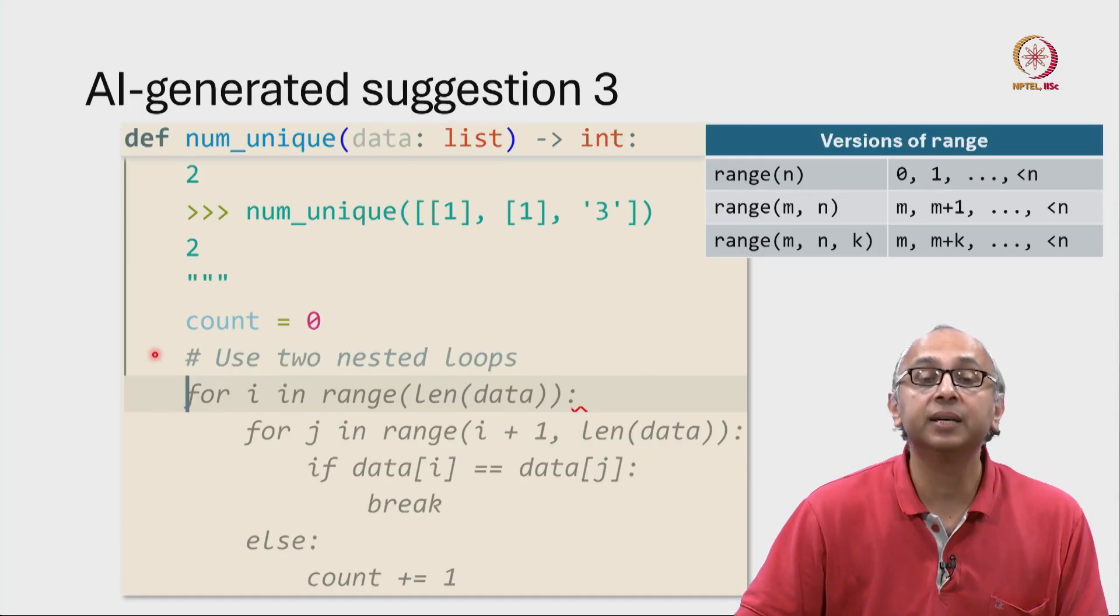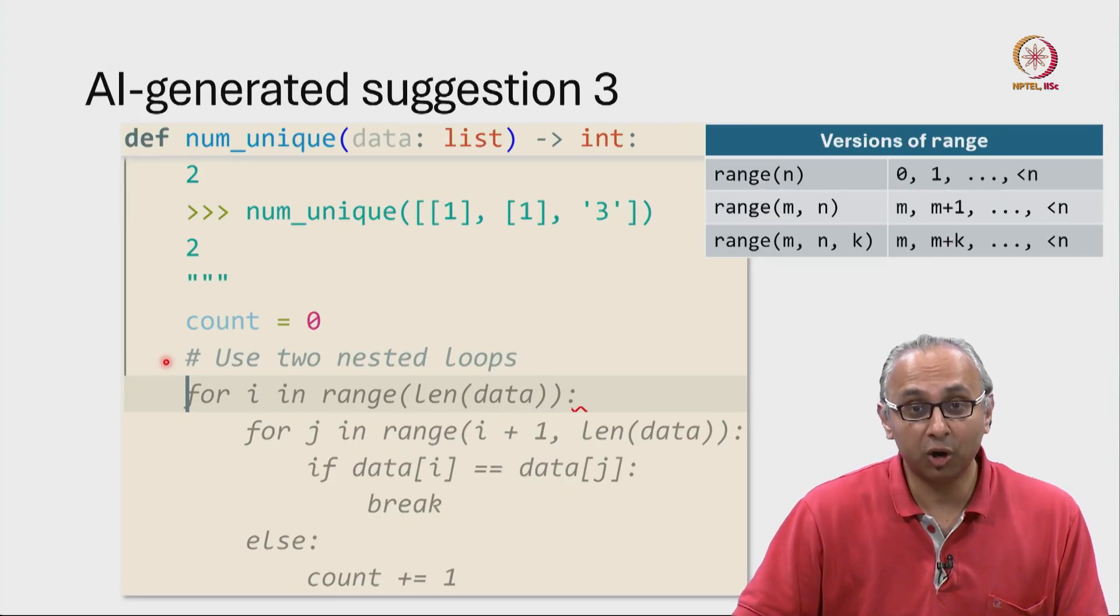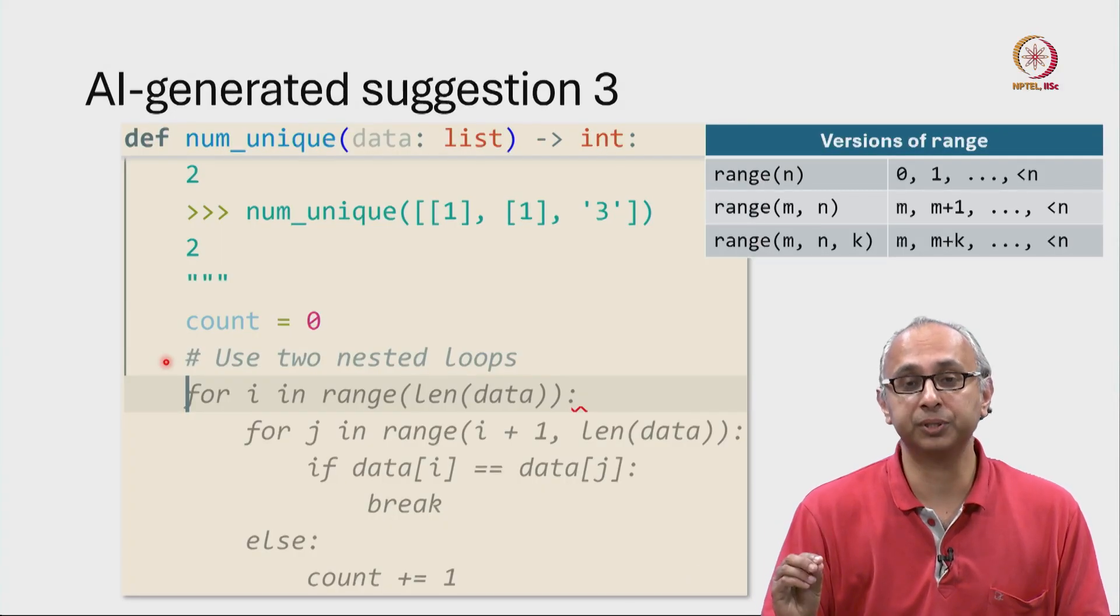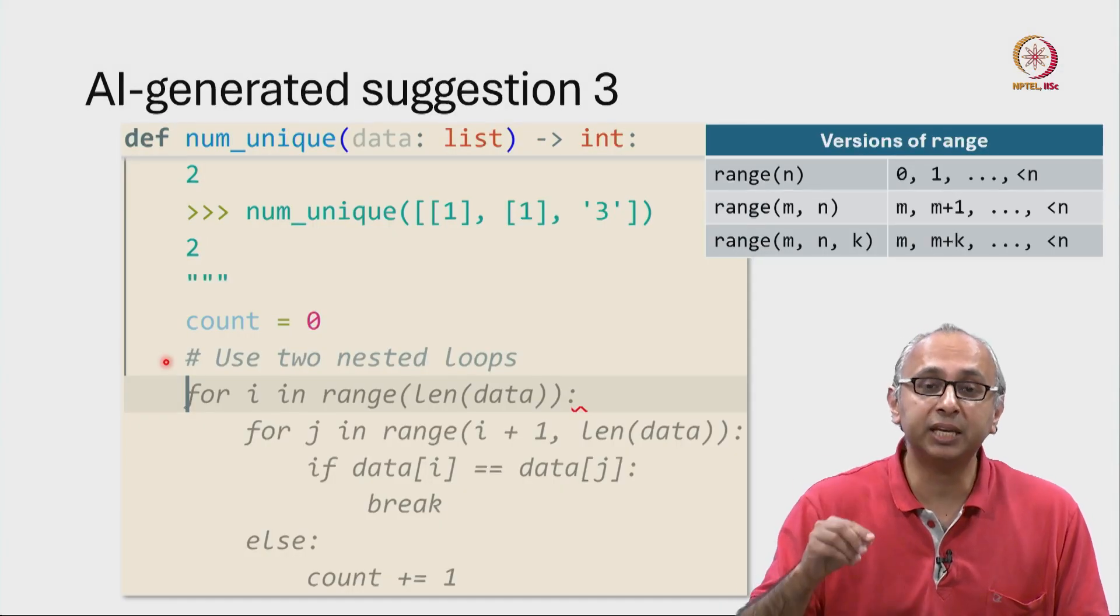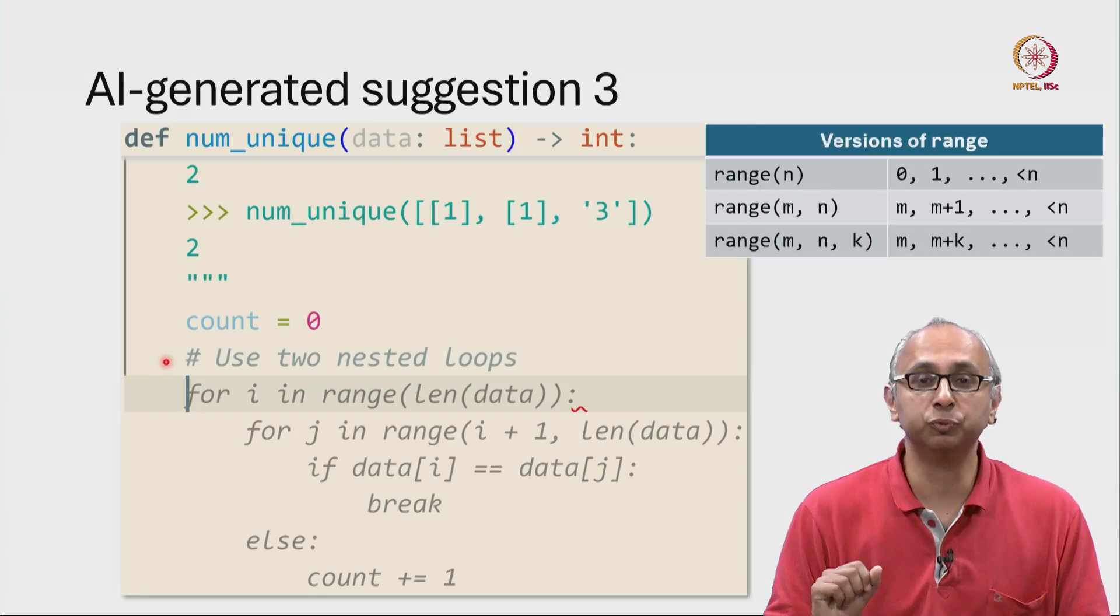And here again, I have used a technical prompt. I'm telling the AI to initialize a variable count equal to 0. So perhaps I'm going to use this to accumulate an answer. And then I'm in a comment saying, use two nested loops. I am suggesting to my generative AI a particular strategy for writing this code. Because I think this code is best written with two nested loops.